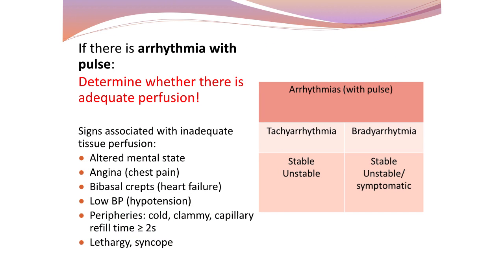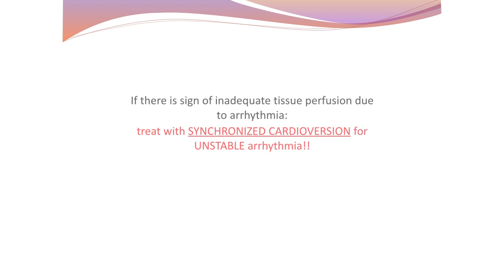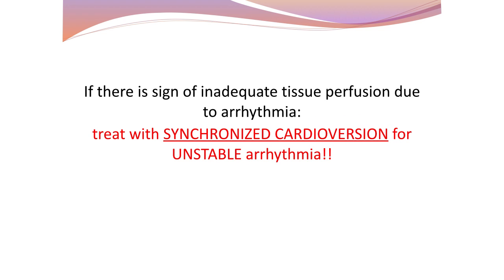If there is arrhythmia with pulse, look for signs of inadequate tissue perfusion and decide whether this is a stable or unstable rhythm. If there are signs of inadequate tissue perfusion due to arrhythmia, treat with synchronized cardioversion for unstable arrhythmia.